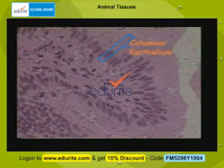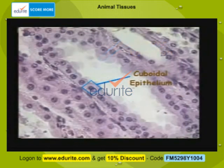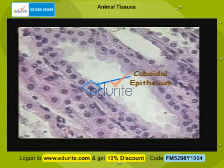Columnar epithelium is a set of cells that are tall and closely arranged. These are found on the walls of the stomach and the intestinal tract. Cuboidal epithelium is a set of cells whose length and height are more or less the same. These are found in kidney tubules, salivary glands, etc.